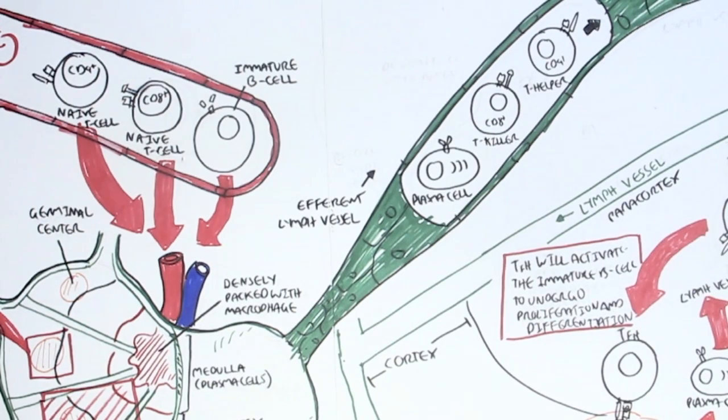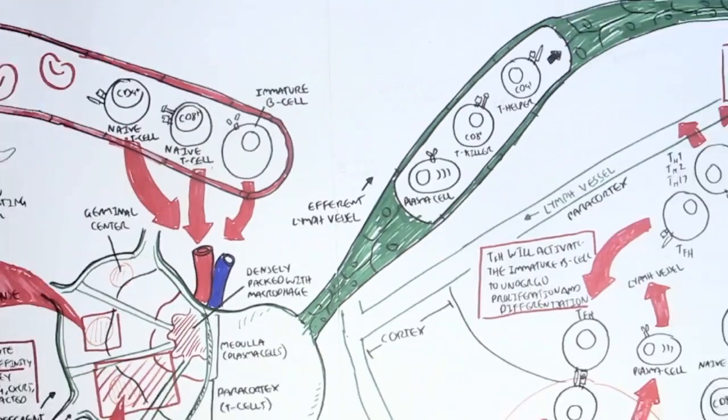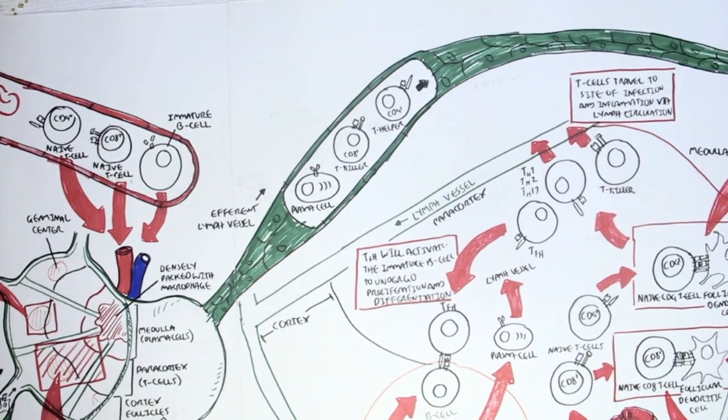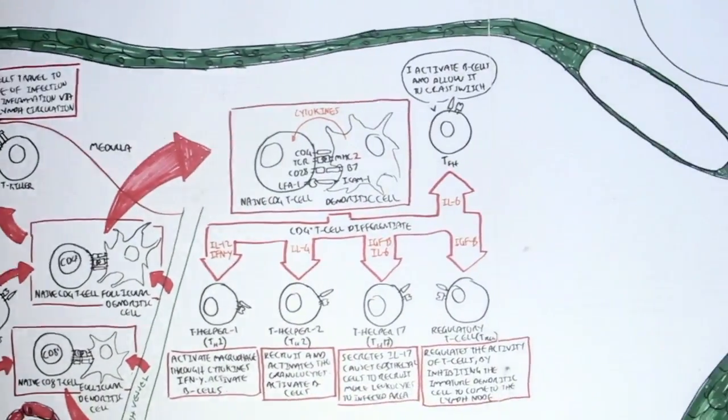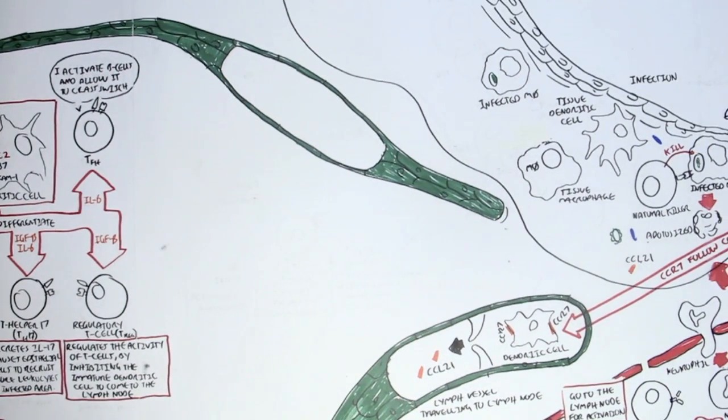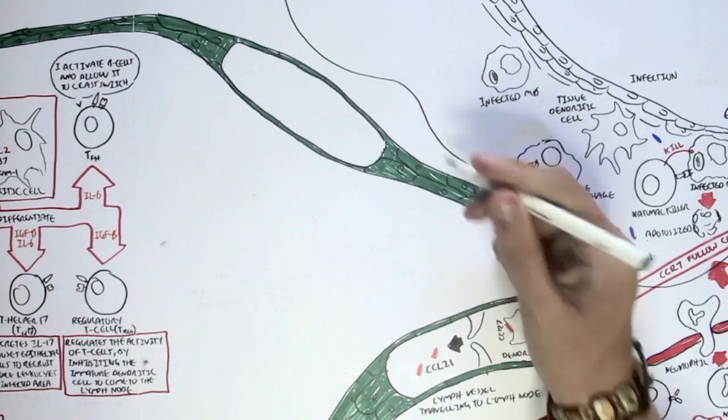And so they leave the lymph node through the efferent lymph vessel, and they circulate around the body through the lymphatic circulation. Some cells migrate to the infected tissue, to where the pathogen invasion occurred, or where it has caused damage.